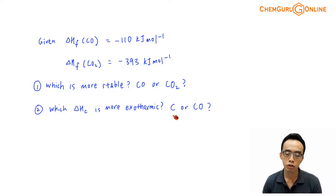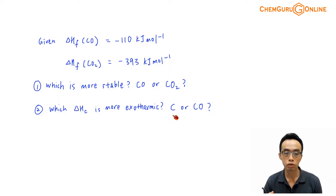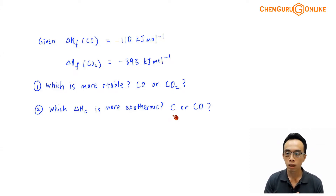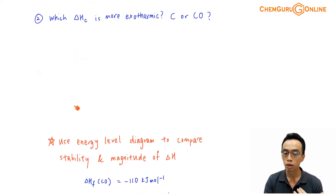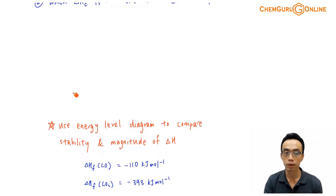Now what is the concept that we can use to try to determine stability involving carbon monoxide versus carbon dioxide? And how do we compare the magnitude in terms of enthalpy change terms — who is more exothermic, who is less exothermic? Interestingly, what we can do is use the energy level diagram to compare results, which some of us might not be aware of.